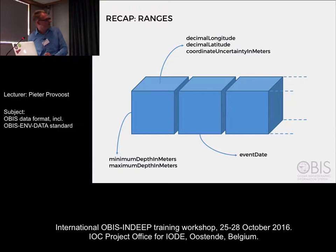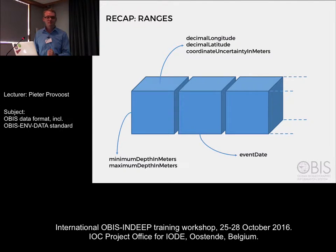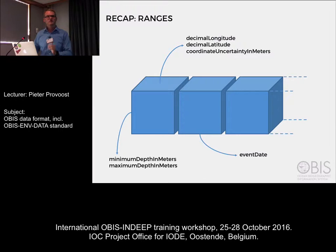This slide is about ranges. For all the dimensions in our data, we can add ranges in Darwin Core: for your coordinates we have longitude and latitude with a radius around that; for depth we have minimum depth and maximum depth; and in event date we can add start time and end time. You can construct a box around your observation with all the uncertainties in time and space.